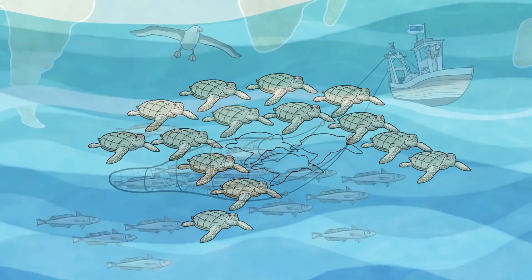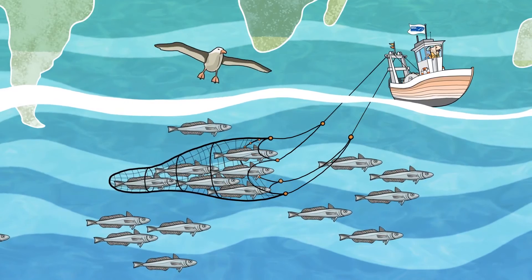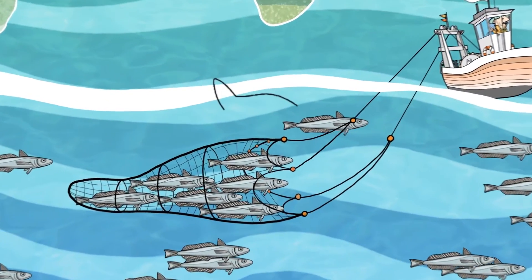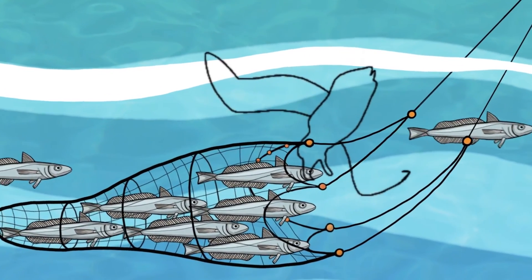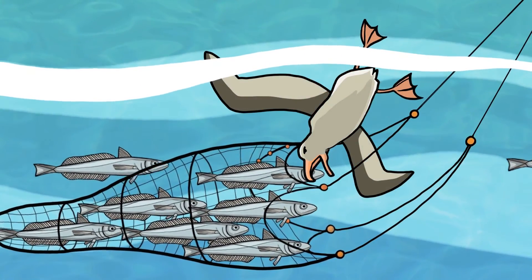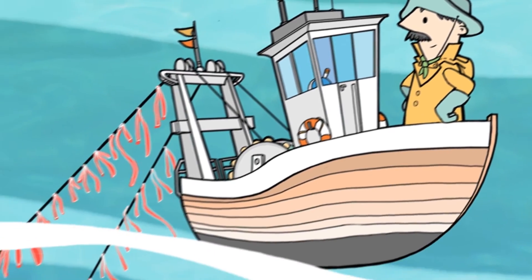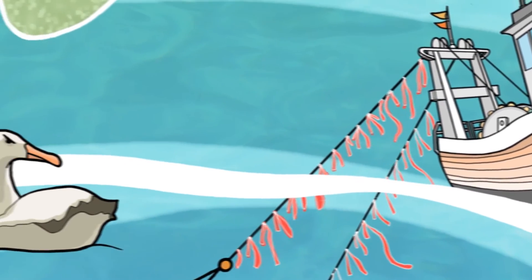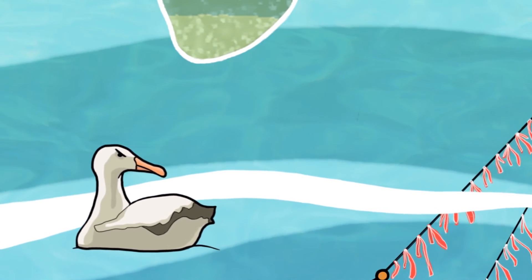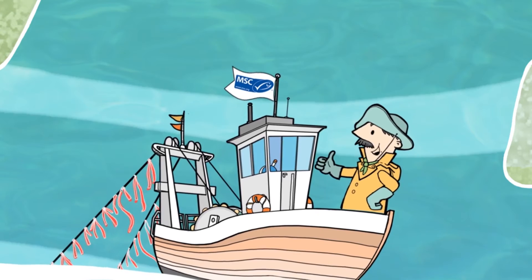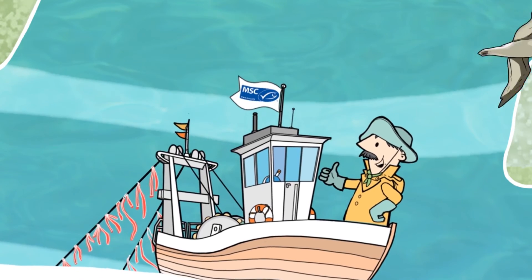The MSC-certified hake fishery in South Africa, for example, took action to lower the number of seabirds accidentally caught in its trawl lines. To keep the birds at a safe distance, they used colored ropes above their nets and trawl wires to scare them away. This simple measure led to a 99% reduction in the number of albatross caught accidentally in trawl lines.